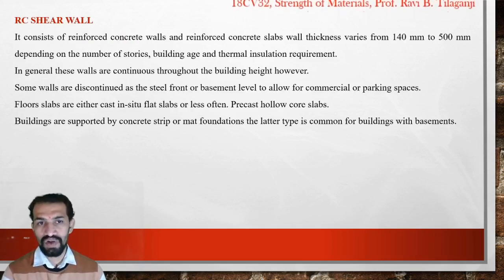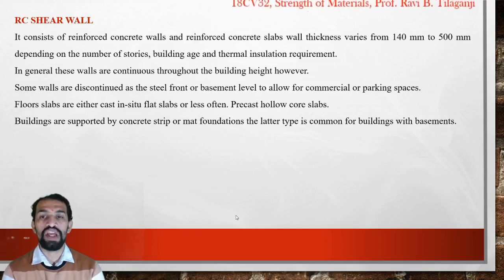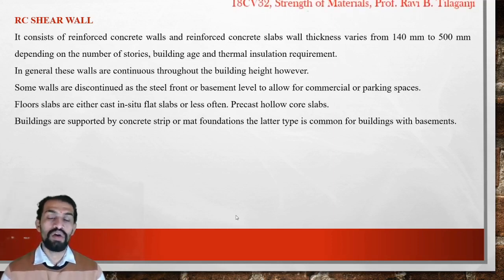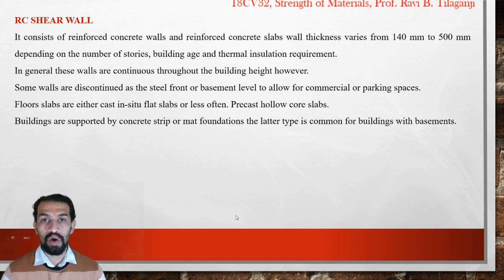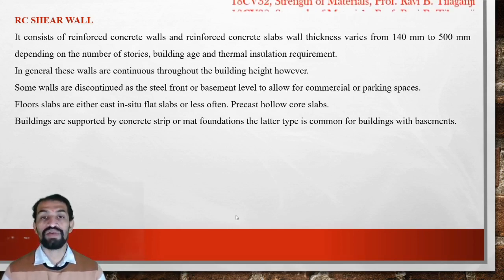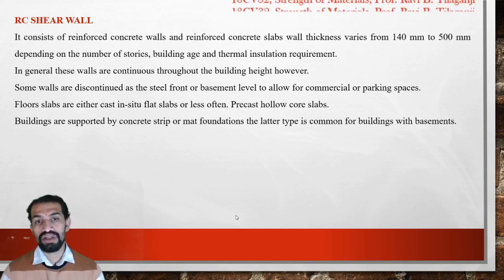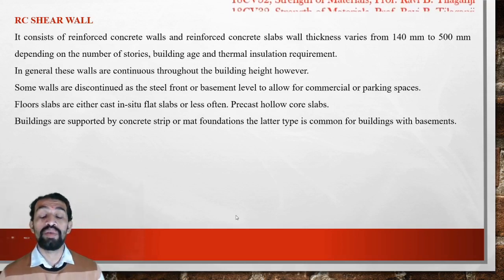RCC shear walls consist of reinforced concrete walls and reinforced concrete slabs. Wall thickness varies from 140 mm to 500 mm depending on the number of stories. Thermal insulation is a key requirement, which is why reinforced concrete shear walls are provided. This type of structure is used in power plants and nuclear power plants, where 500 mm thickness is required due to uranium fission, taking construction age and thermal insulation into account.